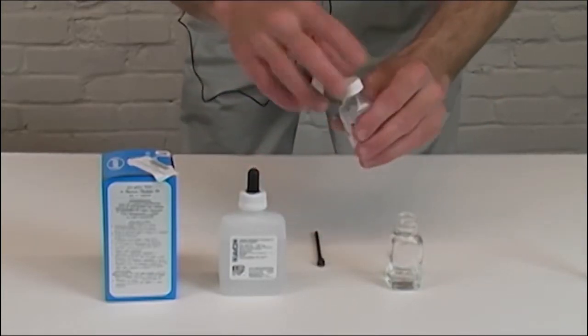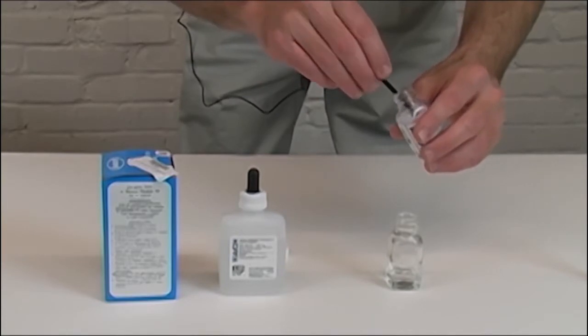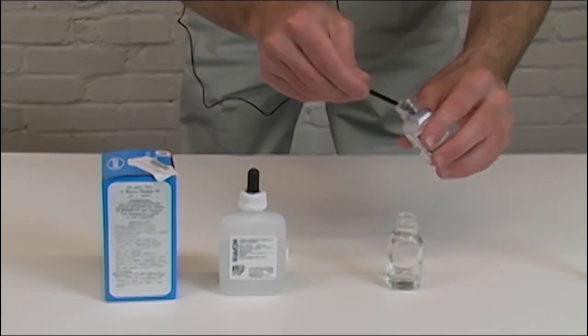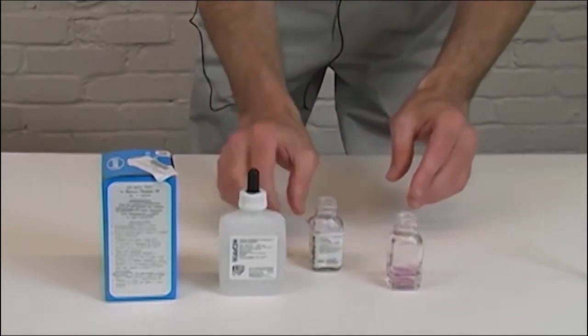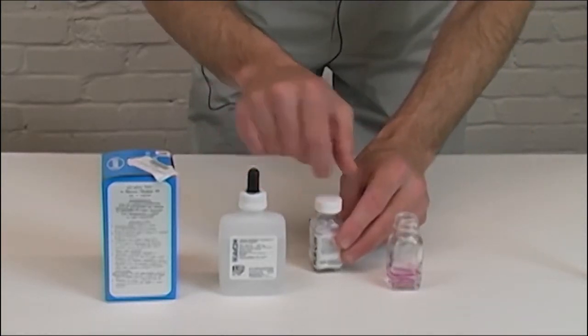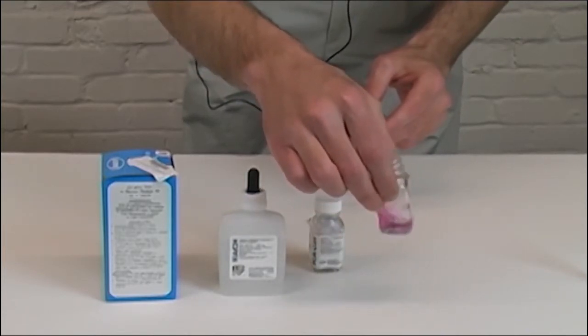Then you will take one measured scoop of the hardness indicator and mix it in your water. Stir it up there, you'll notice it will turn a reddish pink color.